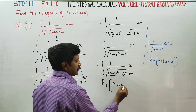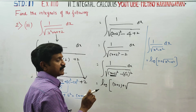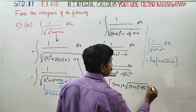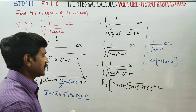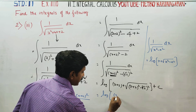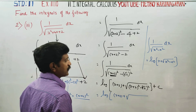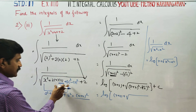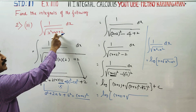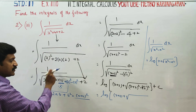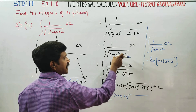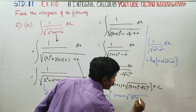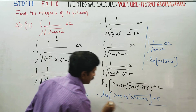Applying the formula: x becomes (x plus 2) and a becomes root 2. So the answer is logarithm of (x plus 2) plus square root of (x plus 2) all squared minus root 2 whole squared, plus C. Next stage simplifies to: logarithm of x plus square root of (x plus 1) plus square root of (x plus 2), plus C. This is your final answer.